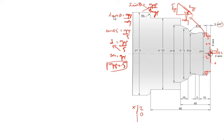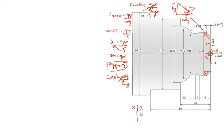Another formula is cos theta equals adjacent by hypotenuse. The hypotenuse value comes out to 5 as well. So all values — opposite, adjacent, and hypotenuse — are confirmed as 5.